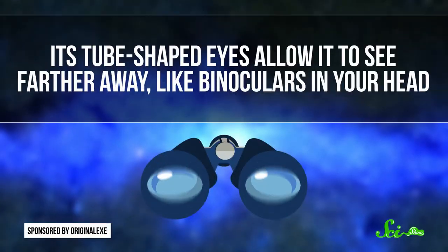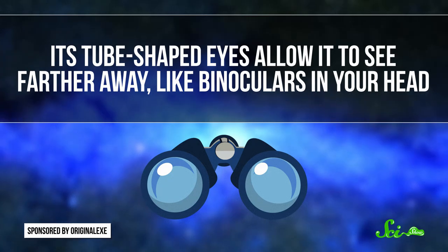But for the barrel-eye, just gathering light isn't enough. Its tube-shaped eyes allow it to see farther away, like binoculars in your head. They give the fish a fairly narrow range of vision, but that's okay, because most of the time it only needs to look in one direction—up.